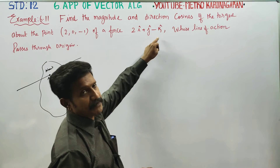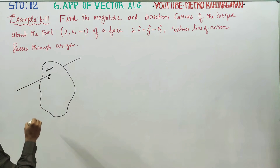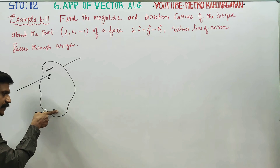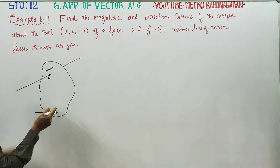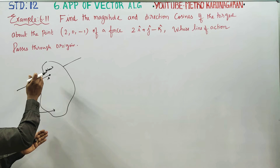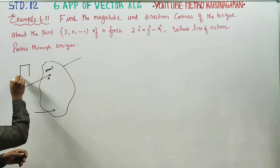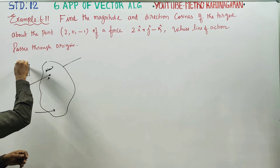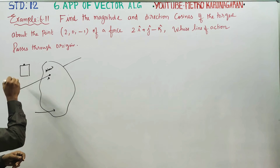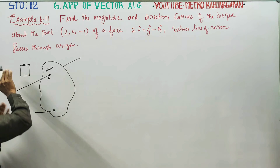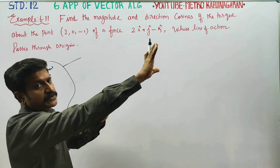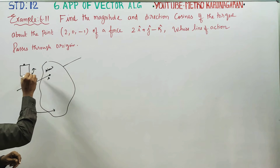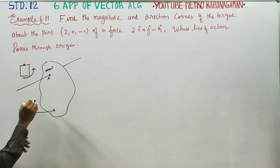The force is 2i plus j minus k. This force will rotate the lamina. That is the torque — the tendency to rotate about the point.